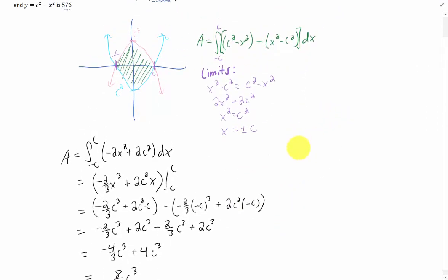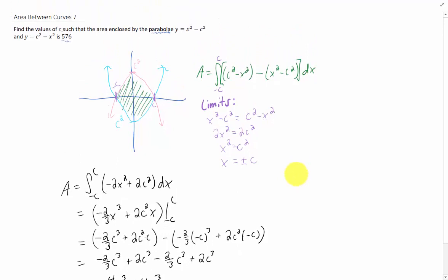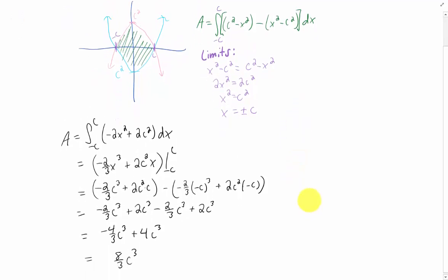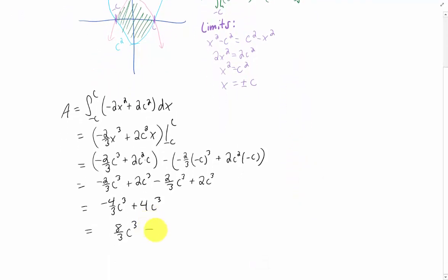But we were told that we needed that area to be 576. Let's hope these numbers turn out to be good. We need this area to be 576. Now, solving this equation would involve dividing everything by eight. 576 is fortunately divisible by eight. That gives us 72.